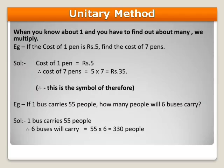The example is: if the cost of one pen is rupees 5, find the cost of 7 pens. That means if I buy one pen, I am supposed to pay 5 rupees. So how much will you pay if you want 7 pens? The solution is: since the cost of one pen is rupees 5, therefore the cost of 7 pens is 7 multiplied by 5, which equals rupees 35.